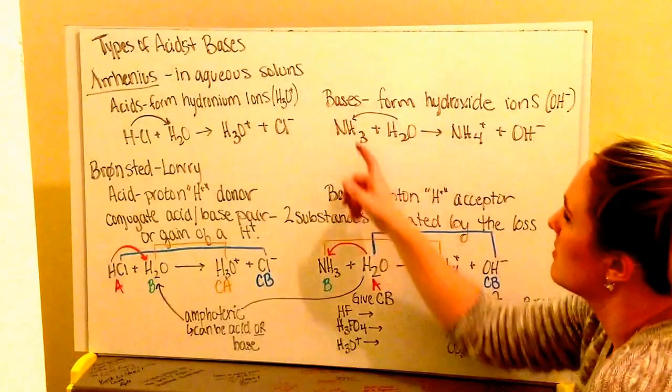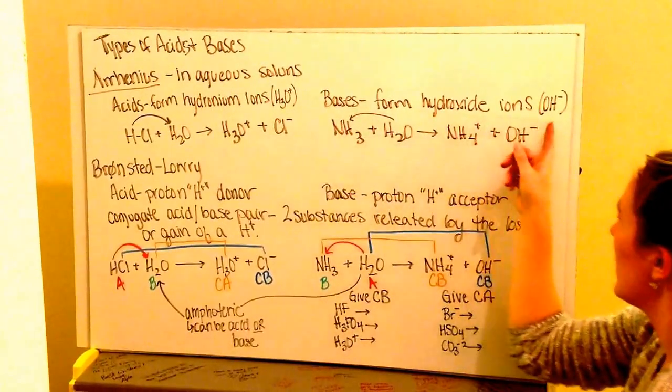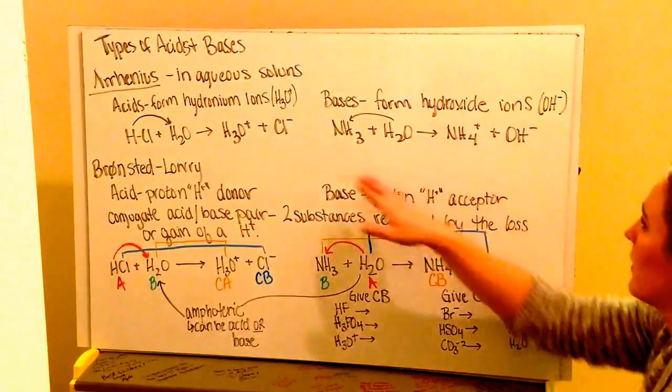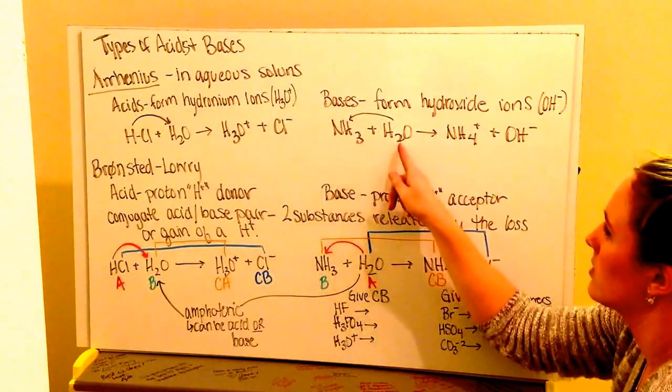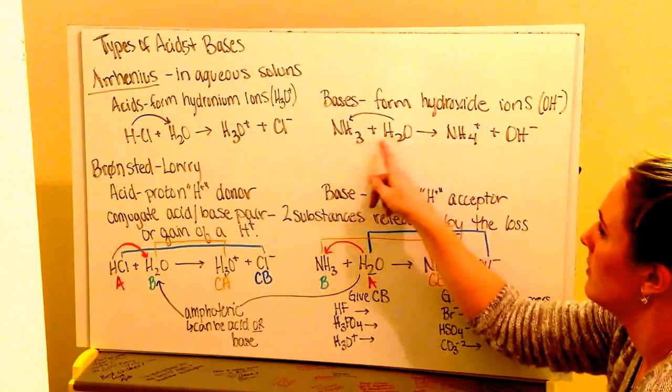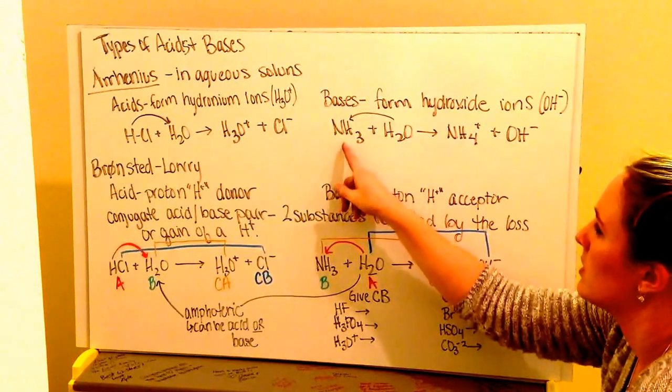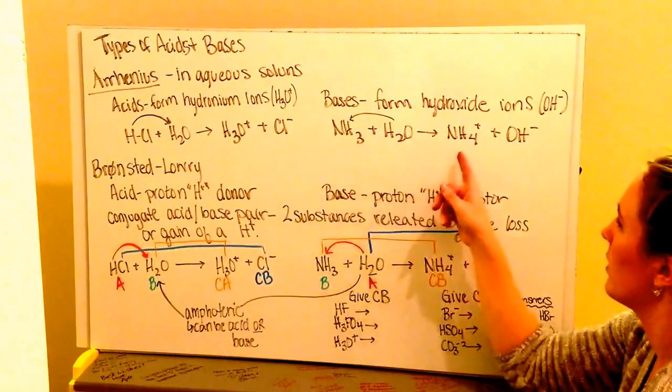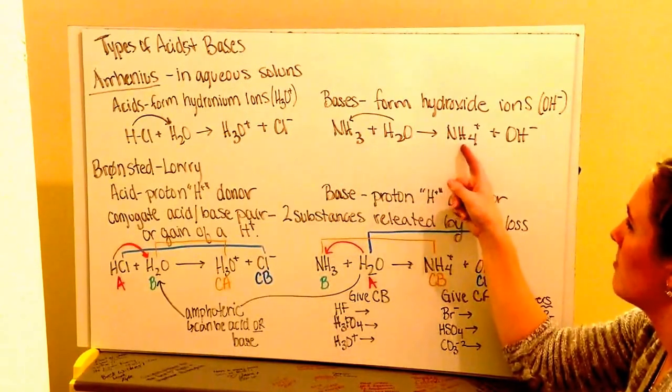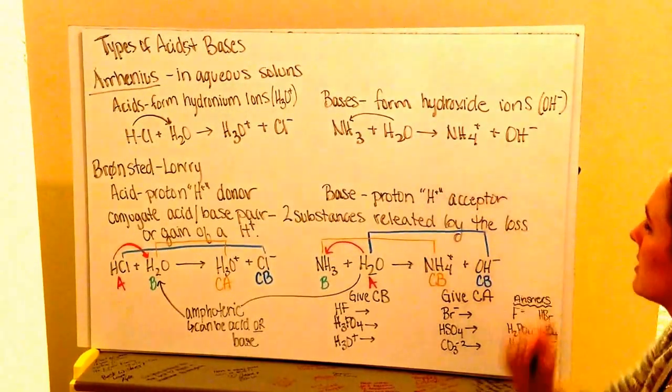Bases, so Arrhenius bases are going to form hydroxide ions, which is your OH-. Here you have ammonia plus water. The water is going to have the, or the ammonia is going to take up the hydrogen ion. It's going to move, therefore, it's going to become ammonium plus hydroxide ions.